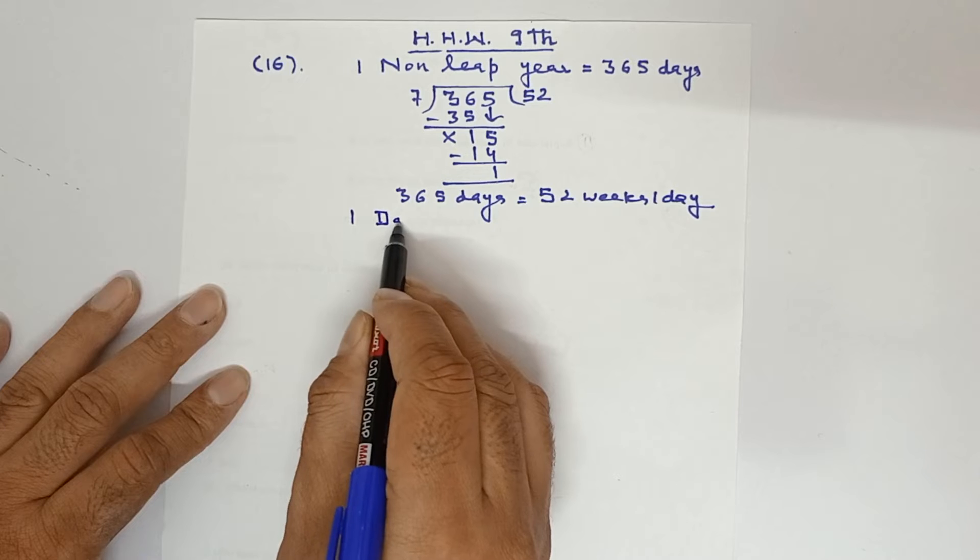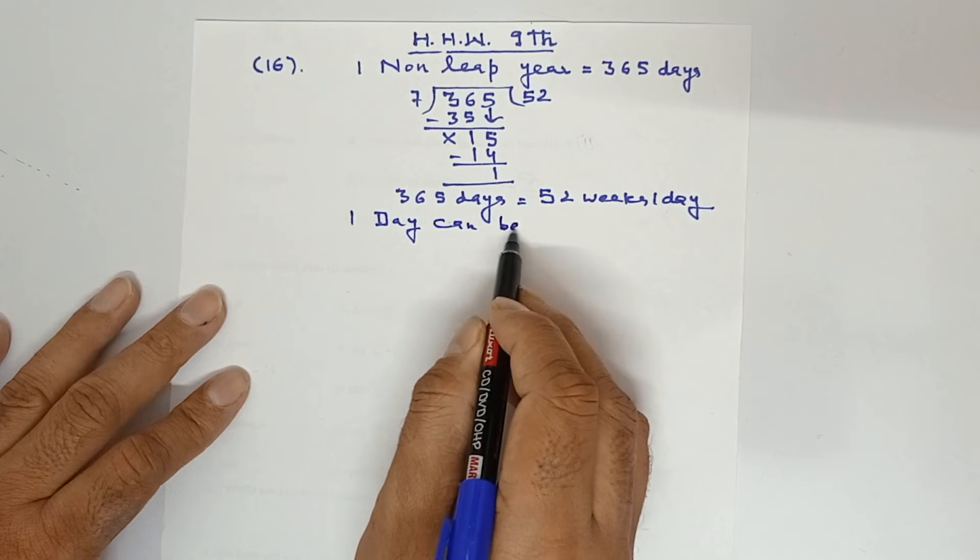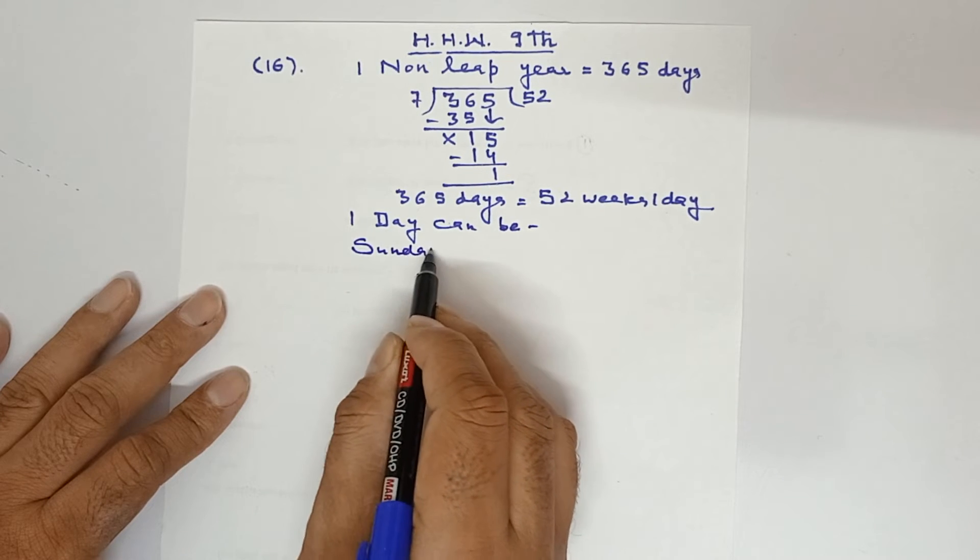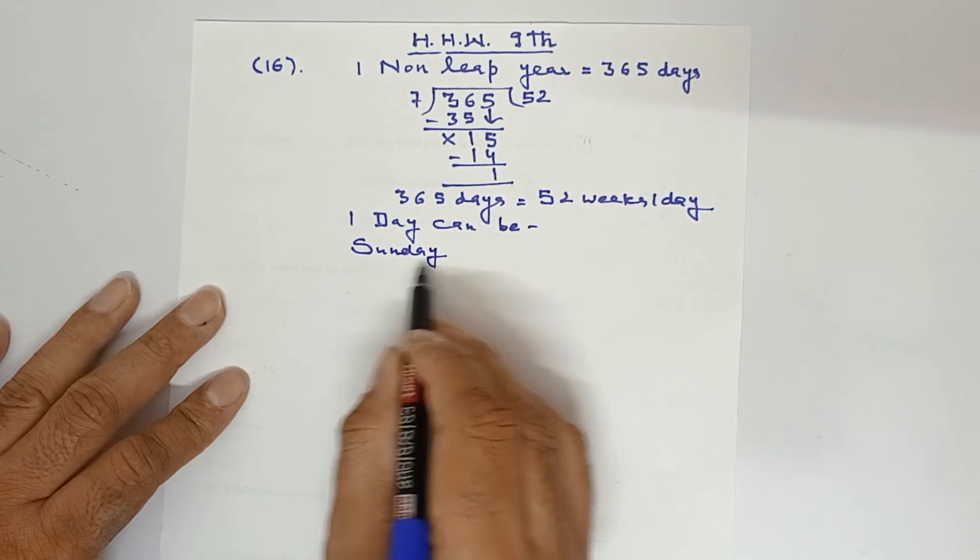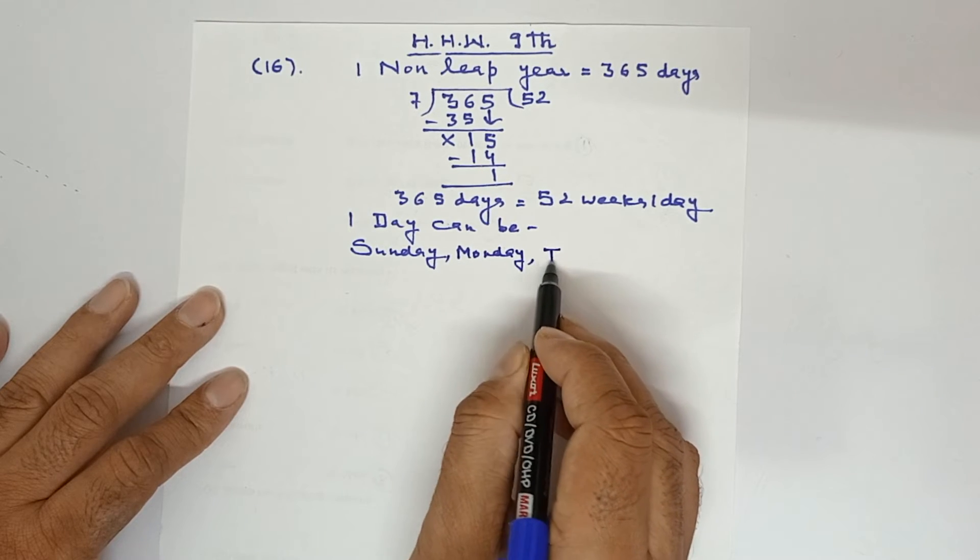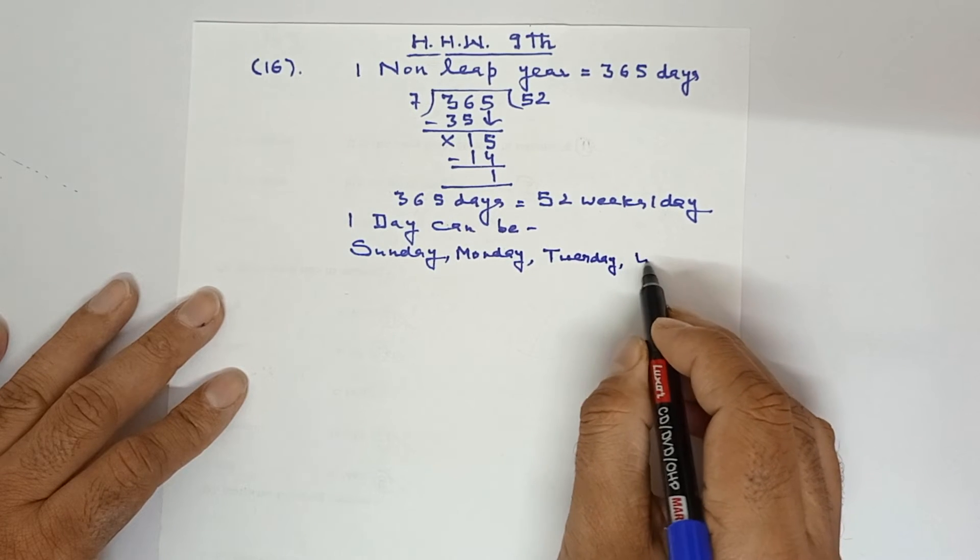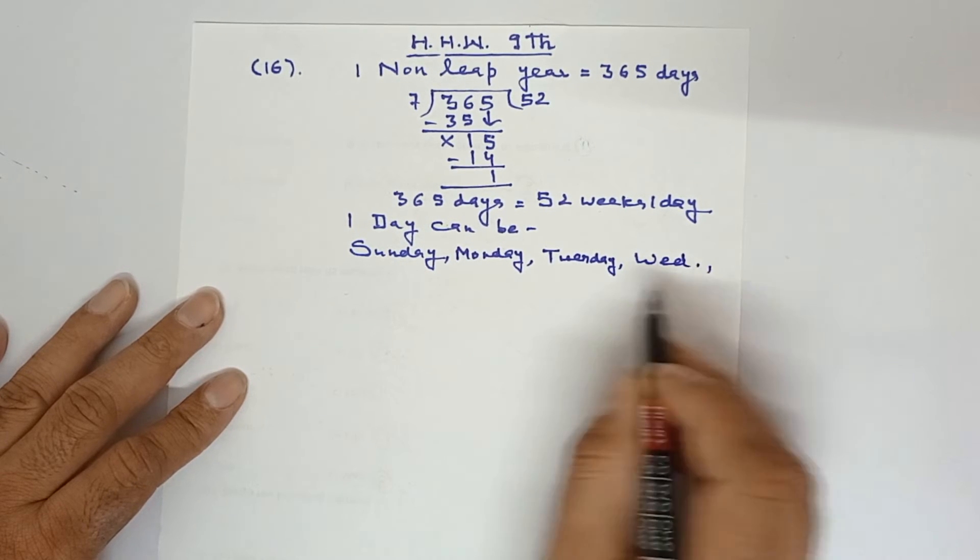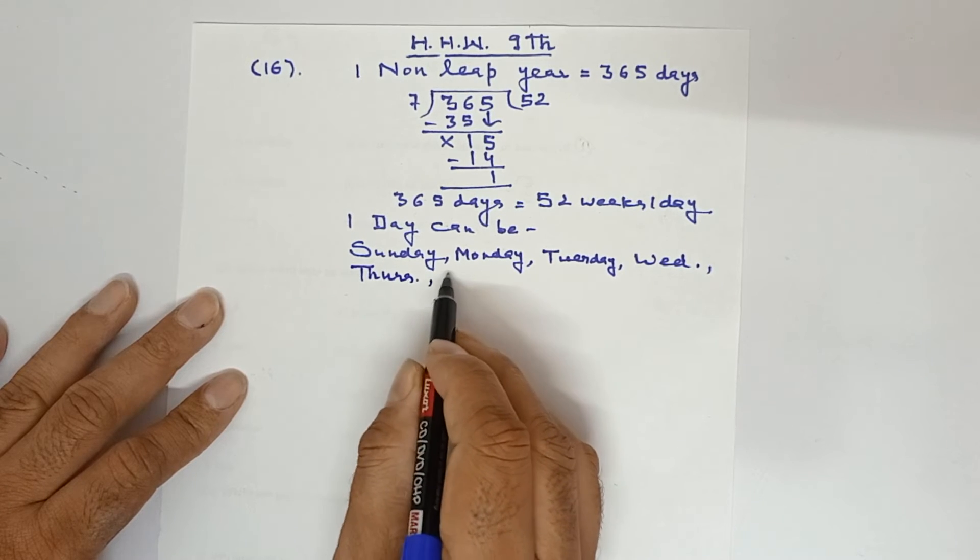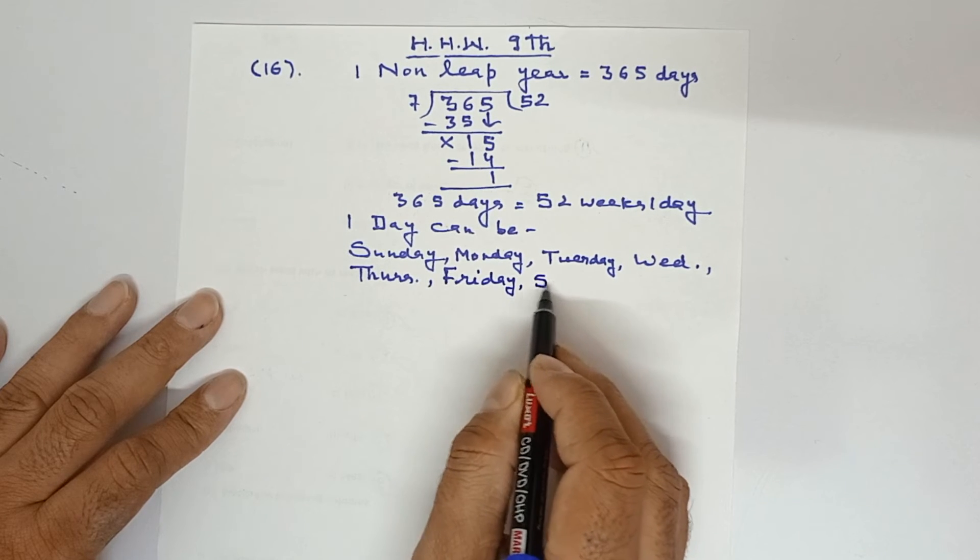This 1 day can be Sunday or it can be Monday, it can be Tuesday, it can be Wednesday, it can be Thursday, it can be Friday, or it can be Saturday.